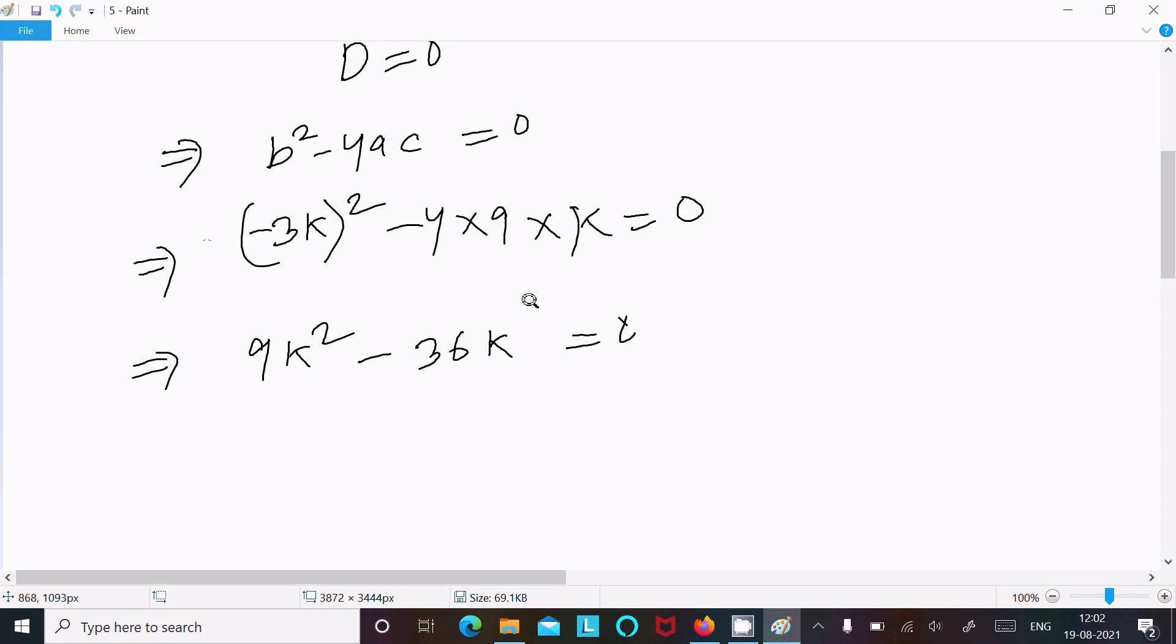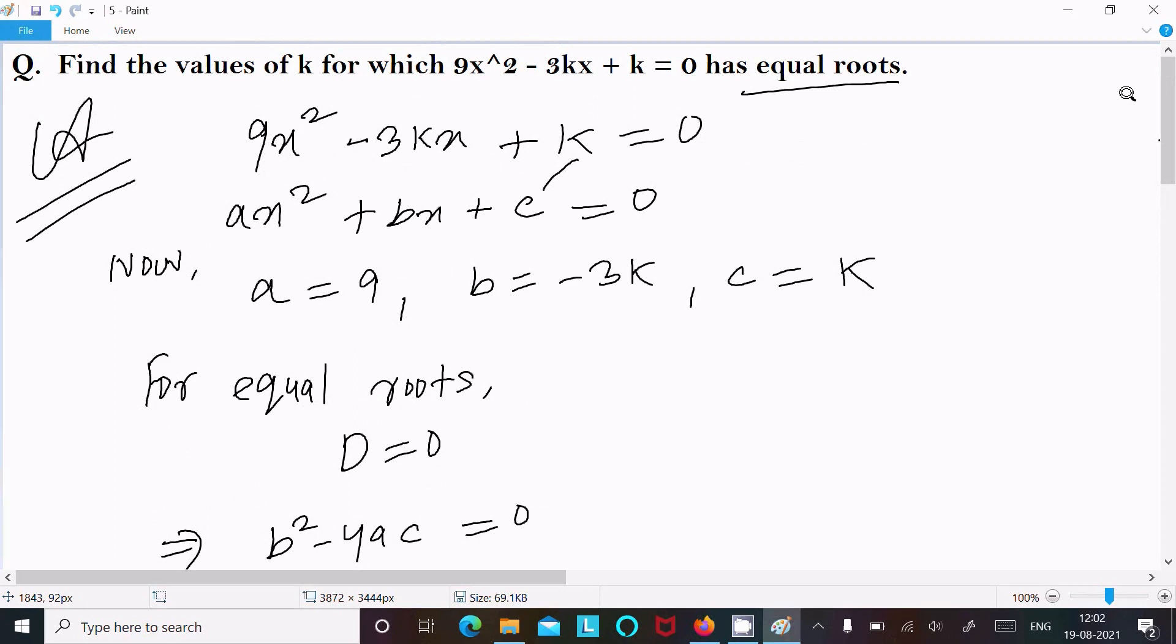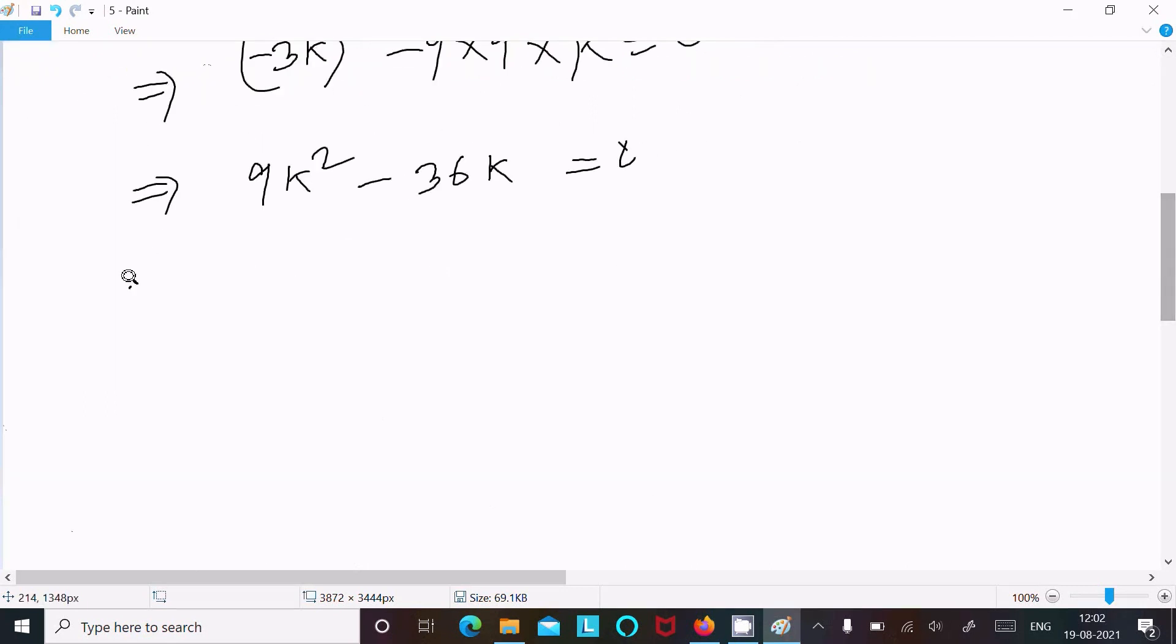Let's take the common factor, so 9k is common. This is now k - 4 = 0. So here 9k = 0 and k - 4 = 0.